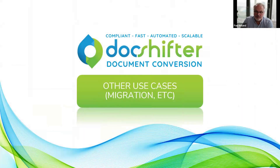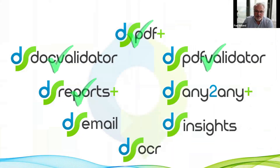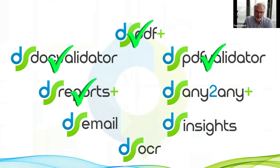Looking at some other use cases: in addition to the main products — Docshifter PDF Plus, Doc Validator, PDF Validator, and Reports — we can also output to other formats besides PDF, such as XML and HTML. We can take legacy documents like old .doc or RTF files and convert them to DOCX. It's truly any-to-any conversion. We can also ingest emails — monitoring inboxes and automatically storing the message itself and any attachments, categorizing them and storing them directly in Viva Vault, helping with correspondence tracking.